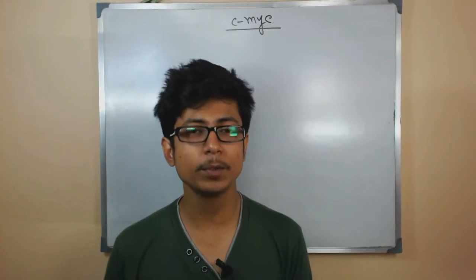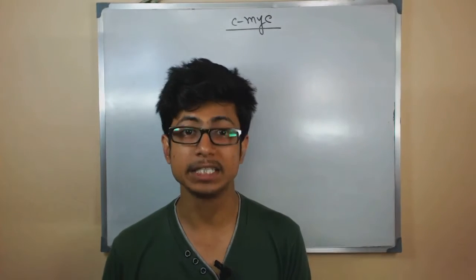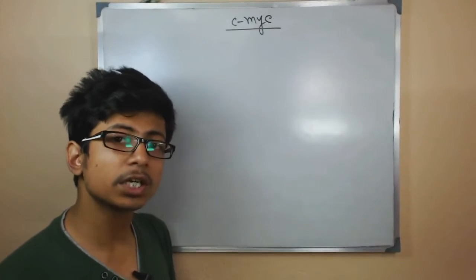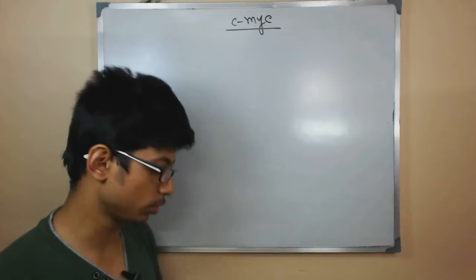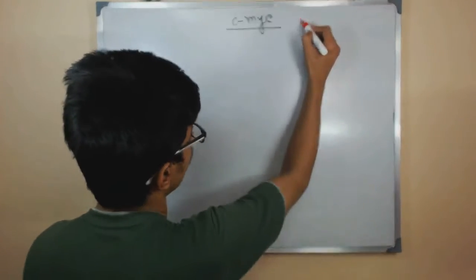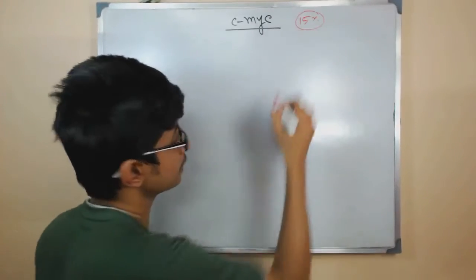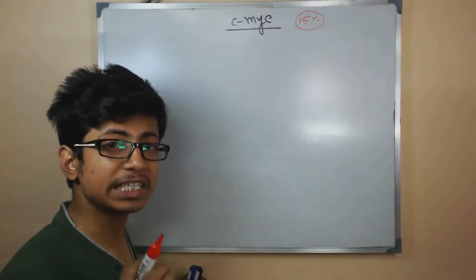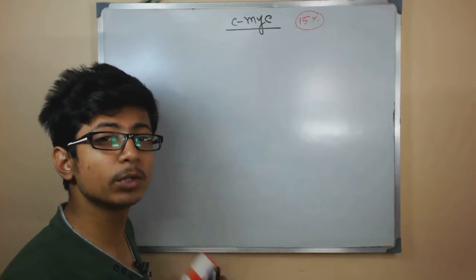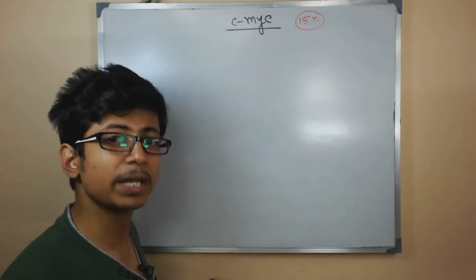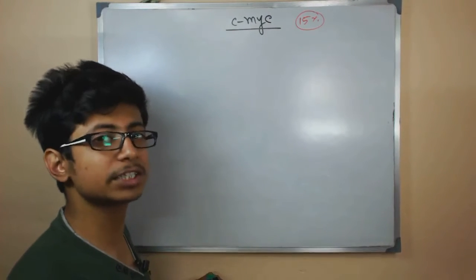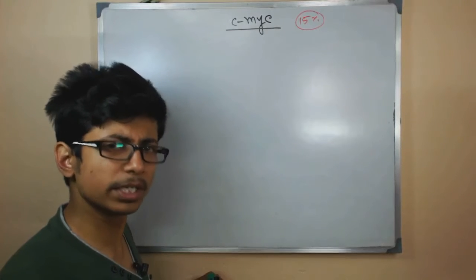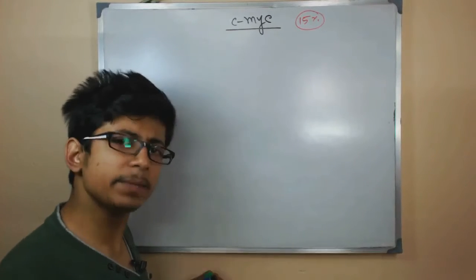In this video we will be talking about the c-MYC gene. c-MYC is a very important gene which controls the expression of almost fifteen percent of all genes present in our body. It is a very necessary regulatory gene which produces a regulatory protein that can modify the expression of other genes present in our body.